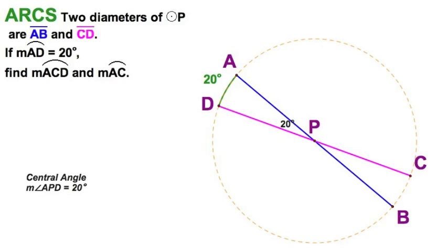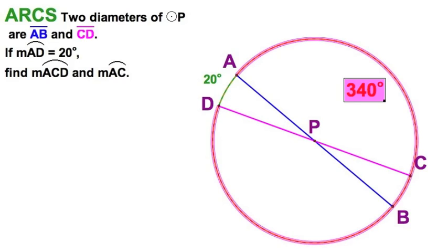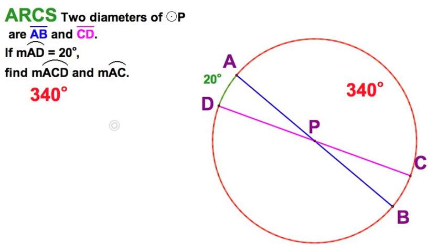So now let's get on with answering the questions at hand. Arc ACD, that would be the major arc starting at A all the way around to point C. Well, it's 360 minus the 20. That would be 340. So we've got 340 degrees there.